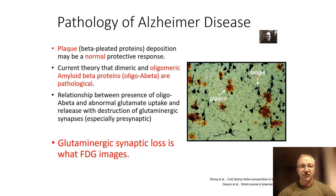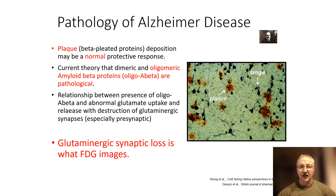Plaque is a beta-pleated protein sheet, and we think it might be a normal protective response to the stresses that are going on. But the current theory is that the oligomeric amyloid beta proteins are the pathological process, and we'll talk about those.